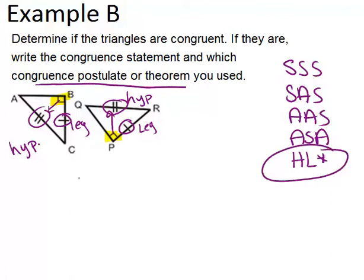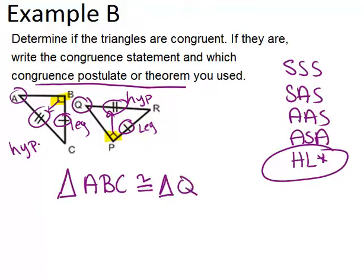Let's do our congruence statement as well. Triangle ABC is the triangle on the left, and that's going to be congruent to triangle - now you need to be careful. Angle A will match with angle Q, so start with Q.